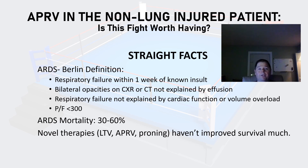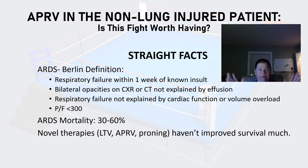Respiratory failure not explained by cardiac function or volume overload — something else is causing their lungs to shut down. The big moneymaker is the PF ratio of less than 300. We used to say a PF ratio less than 300 was acute lung injury, but now we've decided all of these presentations are lung injury and fall into different categories of ARDS: mild, moderate, and severe. Anything less than 300 is considered ARDS.